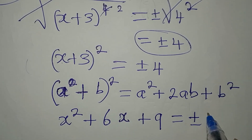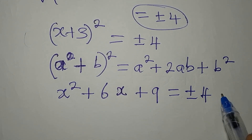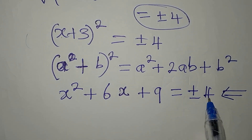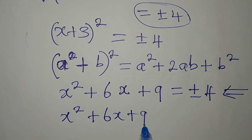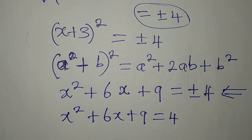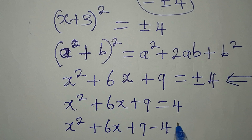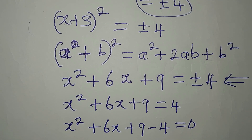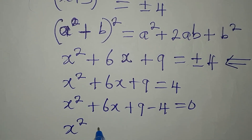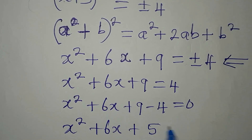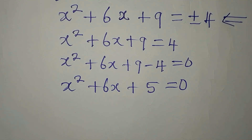This equals plus or minus 4, so I'll pick positive 4 first. We have x squared plus 6x plus 9 equals 4, which means x squared plus 6x plus 9 minus 4 equals 0, giving us x squared plus 6x plus 5 equals 0, since 9 minus 4 is 5.